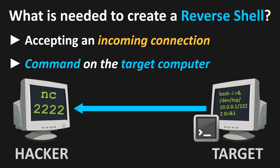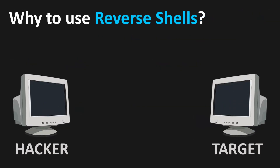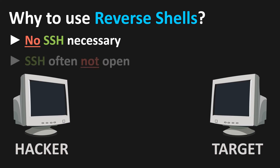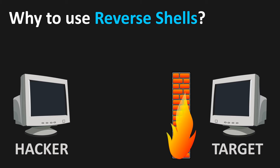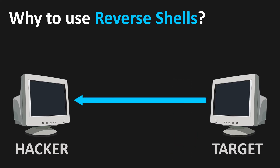Before we do that, let's briefly clarify why reverse shells are used. The attacker does not have to log in to the target computer. SSH is often not even activated, which would make the connection more difficult. Moreover, unscheduled connections from the outside are usually recognized as a threat. Since the target connects to someone else on its own in the case of a reverse shell, the firewall may not respond — unless you use strict allow-listing or block certain IP addresses.